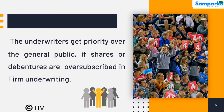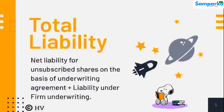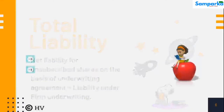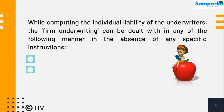If shares or debentures are oversubscribed in firm underwriting, the total liability of the respective underwriters will be net liability for unsubscribed shares on the basis of the underwriting agreement, plus liability under firm underwriting, while computing the individual liability of the underwriters.